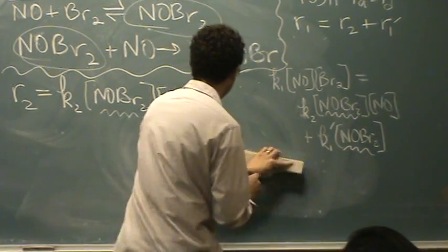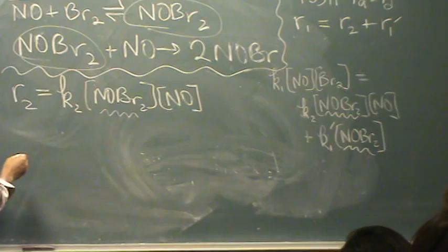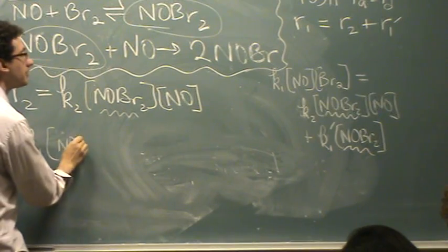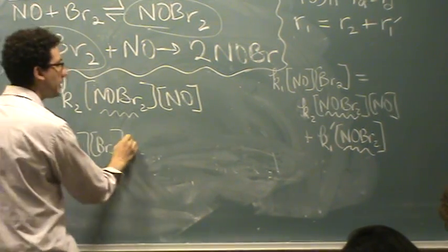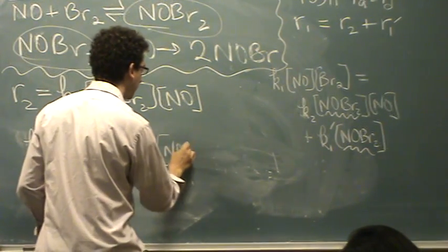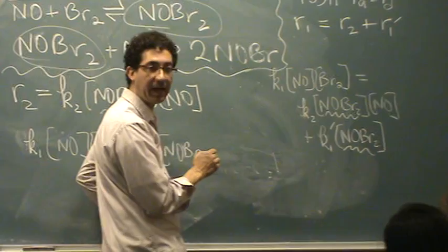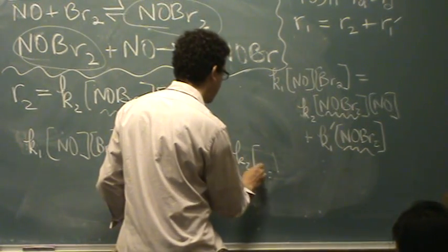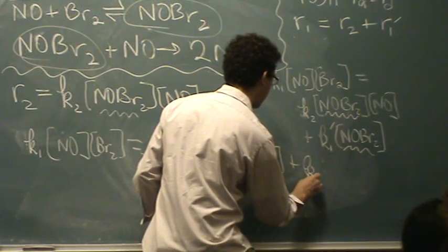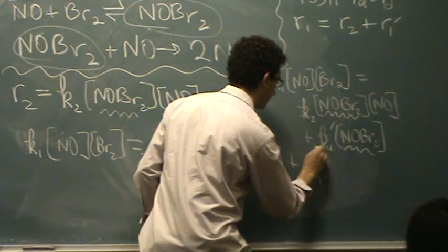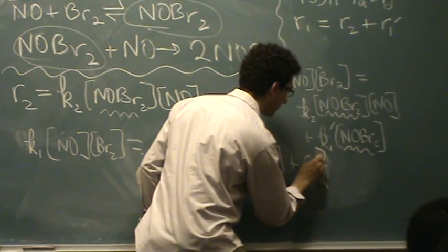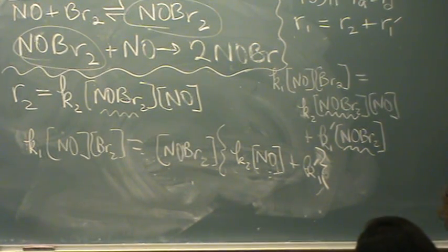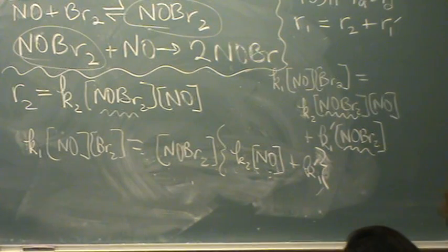K1 NOBr2. I'm going to have to move this. I'm going to do it over here. K1, the left hand side. NO times BR2 equals, now factor out NOBr. Factor out the intermediate. This should always be able to happen somehow. Now, we factor it out and then you get K2 times NO plus K1 prime. Okay. Look at that and make sure you know where the heck I got that from. All you should see is that I factored out the NOBr2 from the right hand side.